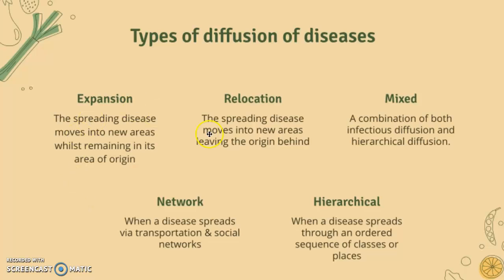Mix is a combination of both expansion and relocation. Infectious diffusion is simply passing a disease on to another person. Hierarchical diffusion is when a disease spreads through an ordered sequence of classes or places — for example, through income groups from high to low, or from family groups, or from urban areas to rural areas. Network diffusion is when a disease spreads via transportation and social networks, such as train or air travel.